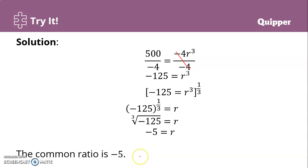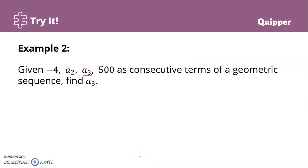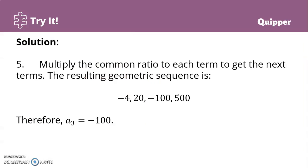With the common ratio of negative 5, we multiply each term by negative 5 to get the next term. Starting from negative 4: negative 4 times negative 5 equals positive 20, times negative 5 equals negative 100, times negative 5 equals 500. Therefore, a sub 3 equals negative 100, and that is the answer.